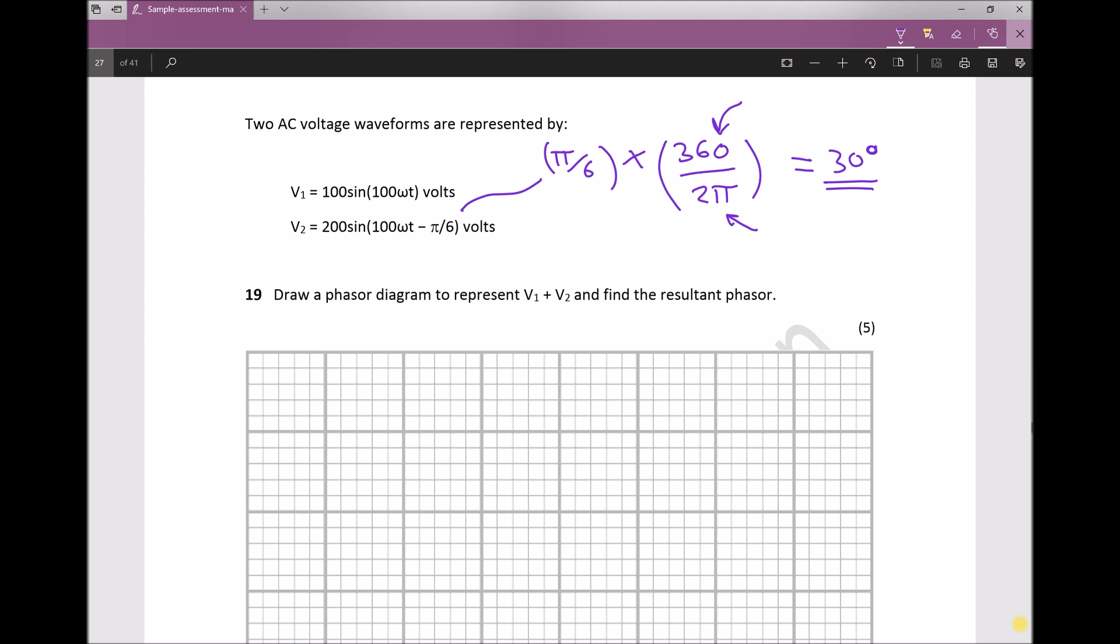We're asked to draw a phasor diagram. We can do this to scale or use trigonometry to find the solution of V1 plus V2. I'm going to do a sketch of the phasor and then use trigonometry to find the solution. When we draw a phasor diagram, both voltages must originate from the same point.